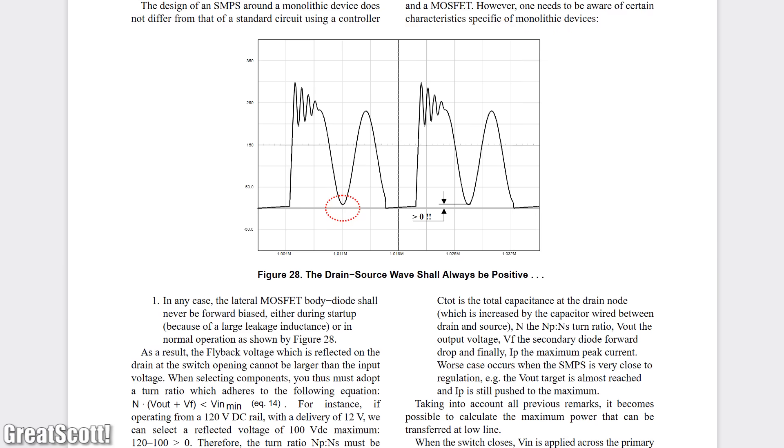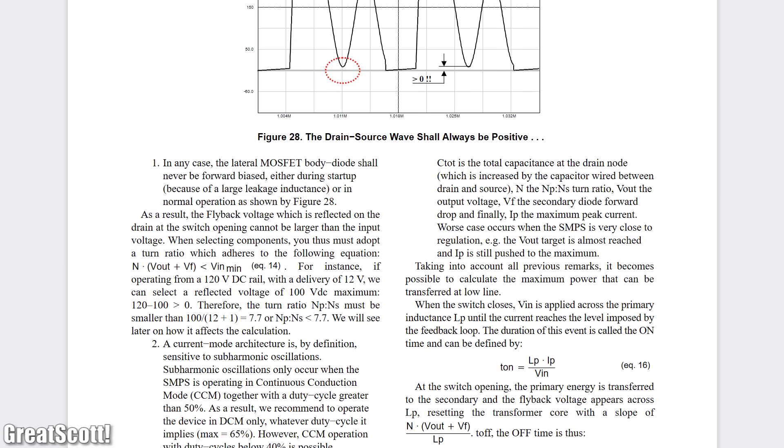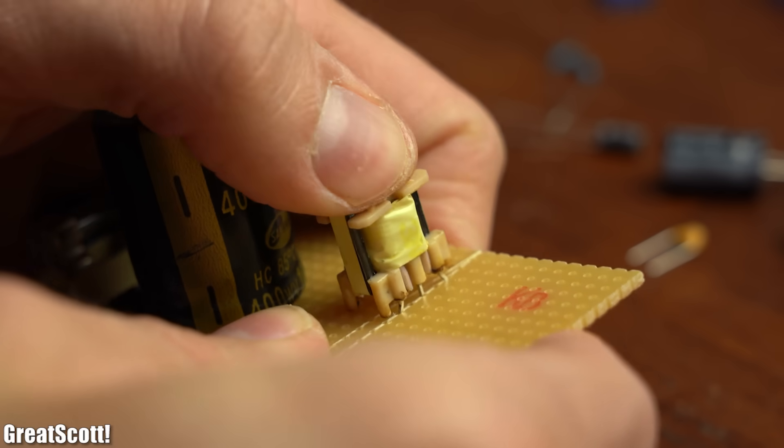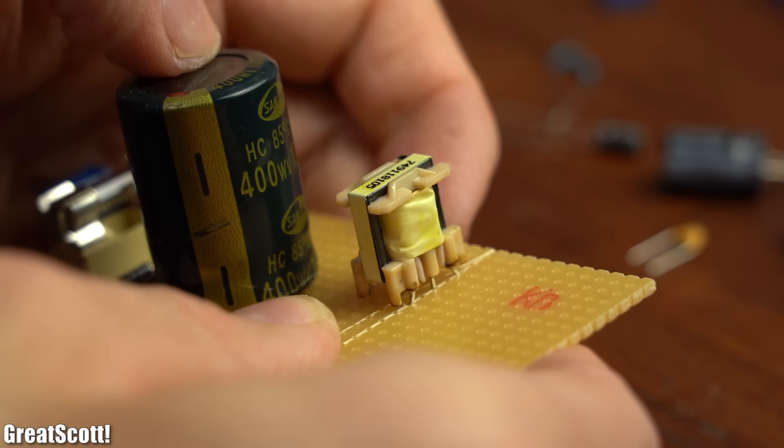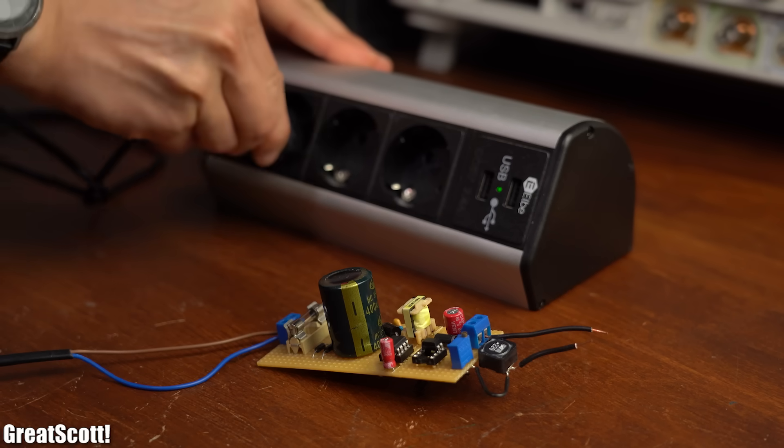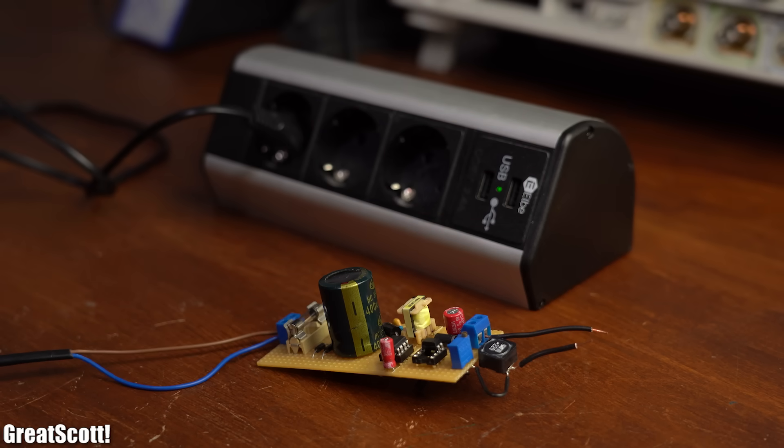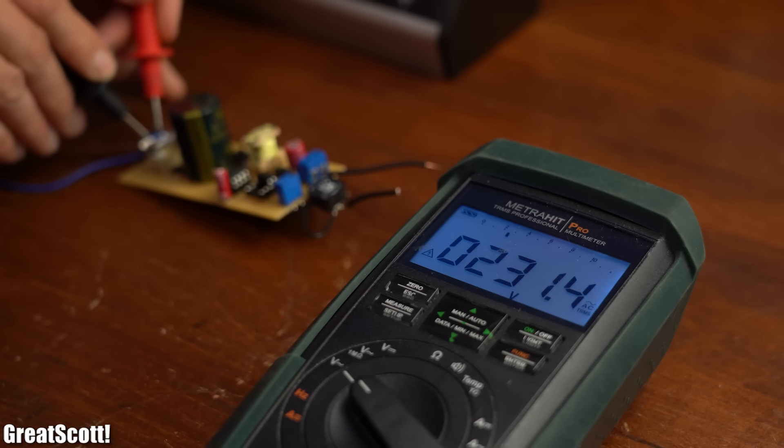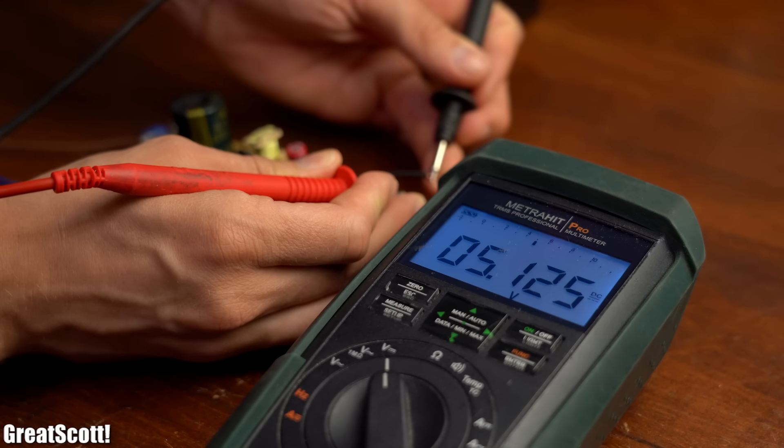With the help of its datasheet, which comes with tons of information, and in combination with a flyback transformer I received, I was able to create a halfway decent switched-mode power supply that can convert 230V AC into 5V DC on its output.